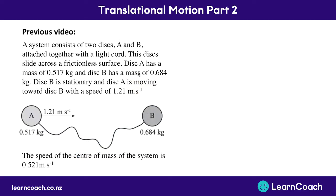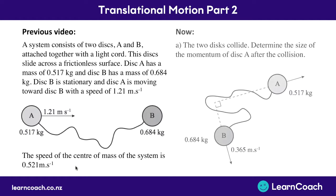In the previous video we saw this question on disks. We've got disk A moving across at 1.21 meters per second with the mass, hitting stationary disk B, and we calculated that the speed of the center of mass was 0.521 meters per second. Now following on from that, the two disks collide with one another.